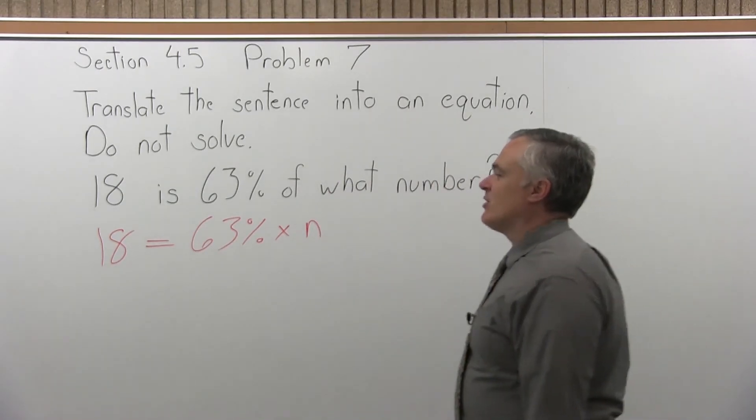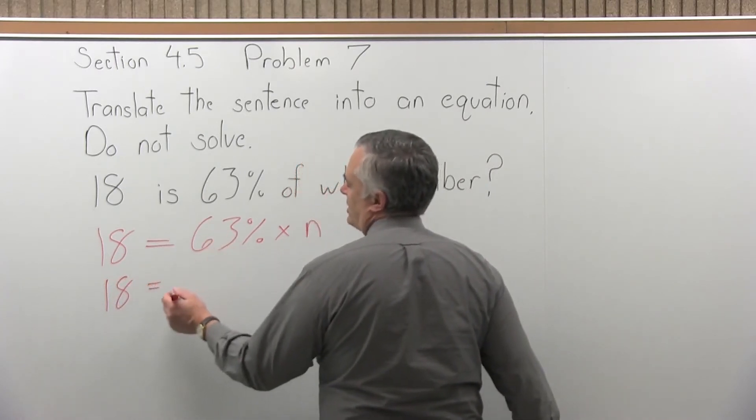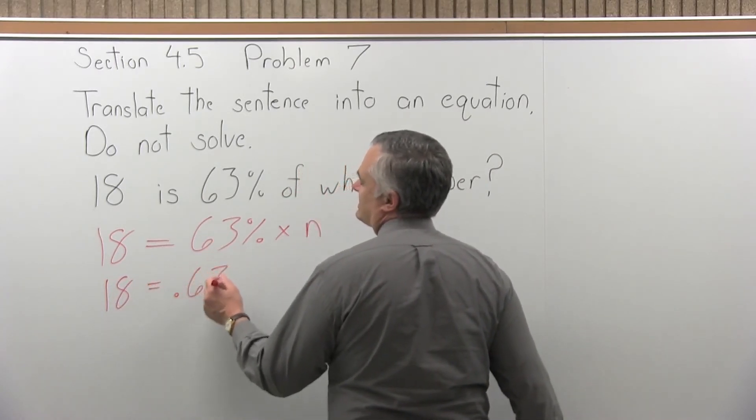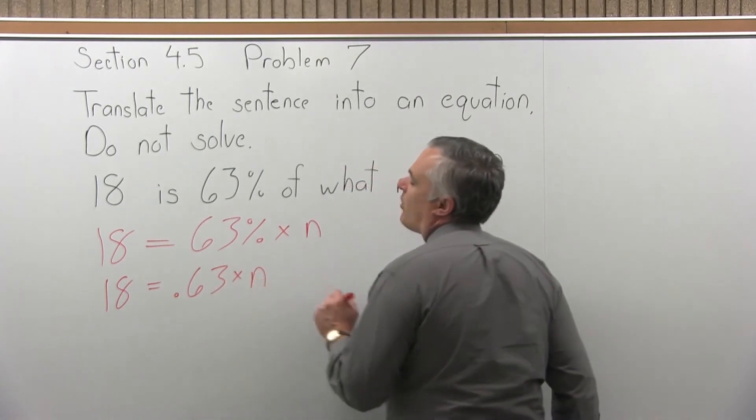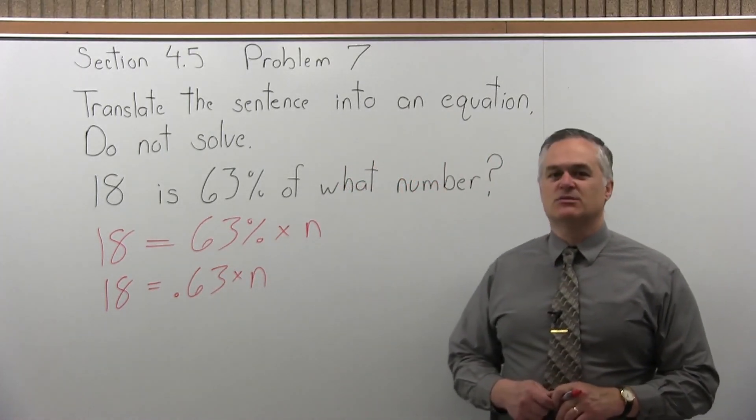That satisfies the requirement, it is an equation. It is a little nicer though if you're going to actually solve it at some point to change that 63% to a .63. So it would have 18 equals .63 times n.